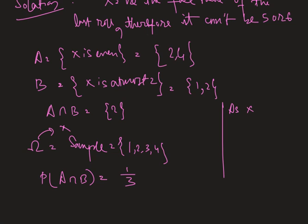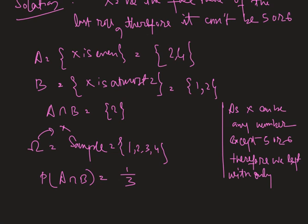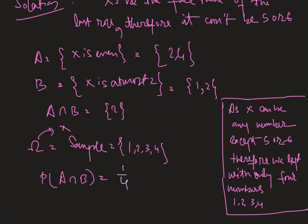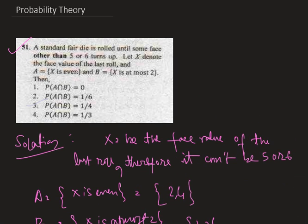As X can be any number except 5 or 6, therefore we are left with only 4 numbers, that is 1, 2, 3, and 4. So our required probability reduces to 1 by 4. Hence option 3 is the right answer.